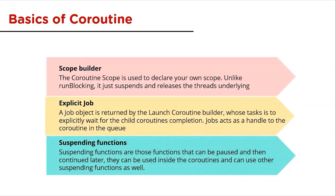Moving on to the basics of coroutines. First is the scope builder. CoroutineScope is used to declare your own scope — unlike runBlocking, it suspends and releases the underlying thread. It is used to set the scope for new coroutines. CoroutineScope is responsible for controlling the lifecycle of a group of coroutines, and scopes wait for their associated coroutines to complete before completing themselves.